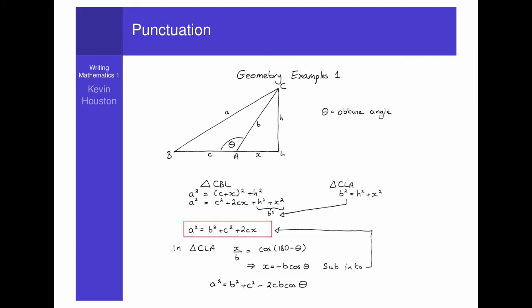Or do they mean a squared equals b squared plus c squared plus 2cx, full stop, in triangle CLA, x over b equals cosine 180 minus theta implies, etc. Sure, we can work it out, but why should we have to work out what was intended? It's hard to understand mathematics without people putting extra obstacles in our way.